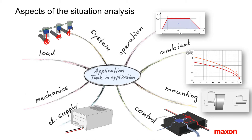Five, mounting conditions, which are also related to ambient — for example, cooling — but also cable length and fixation of the drive. Six, related to mounting is the mechanical layout. What kind of mechanical transformation is used? What are the transformation parameters — for example, reduction, efficiency, friction — but also support of reaction forces.